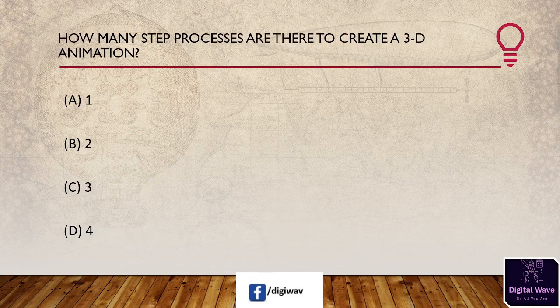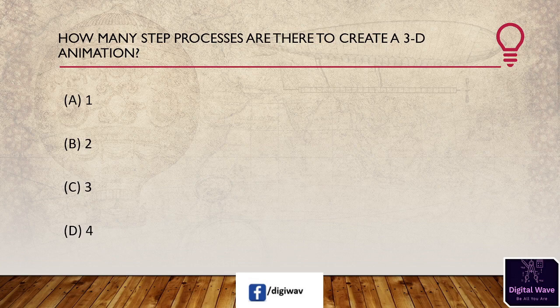Question 3: How many step processes are there to create a 3D animation? Options are 1, 2, 3, and 4. The right answer will be C, 3.